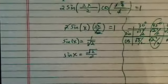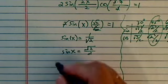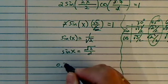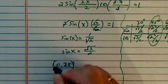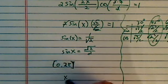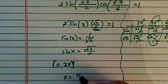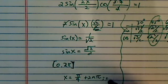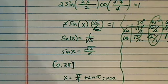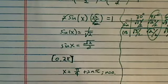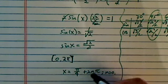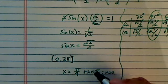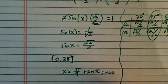And in our 0 to 2 pi interval, let's put a bracket here. x is equal to pi over 4 plus 2n pi, n equal to 0, because when n equal to 1, that's bigger than 2 pi.